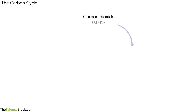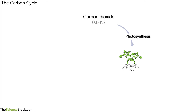Well, it starts off by getting into plants, and the process is called photosynthesis. This is how it gets into living things, into the food chain. The plant will make its body tissue from the glucose that it makes from photosynthesis.